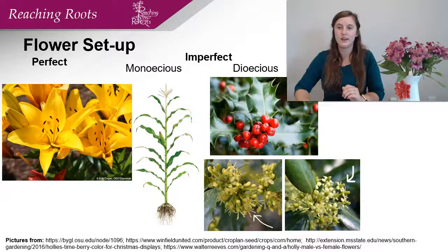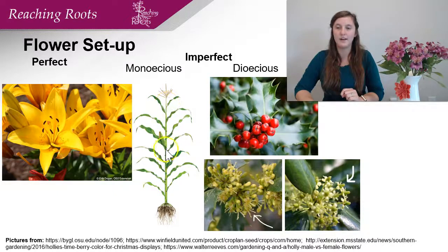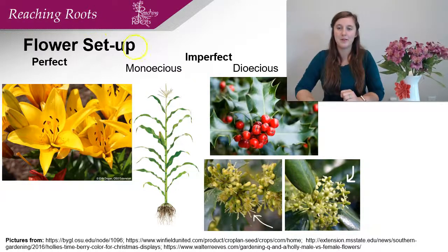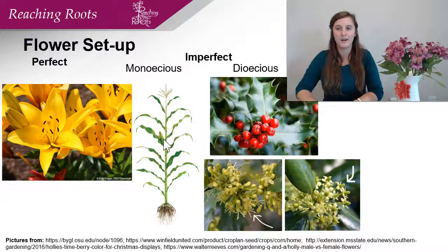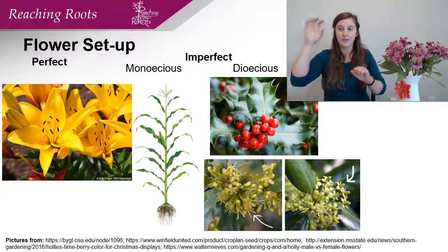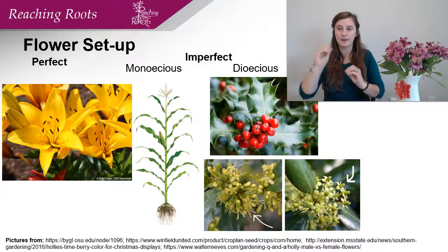Monoecious plants — a good example is a corn plant. This corn plant has two different areas where there's a flower. One part only has male parts and produces pollen, and then there's another flower down here, which in corn we call the ear, and that has all female parts. So the plant has both male and female parts, but they're in different locations. It's imperfect because they're not right next to each other.